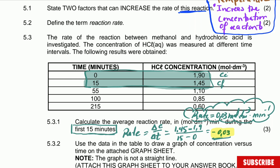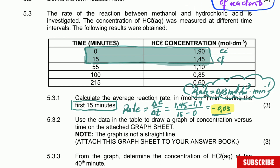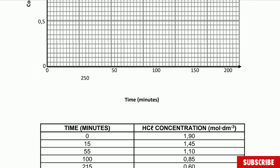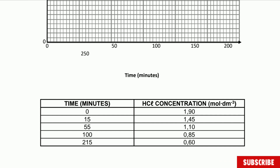Question 5.3.2: use the data in the table to draw a graph of concentration versus time on the attached graph sheet — the graph is not a straight line. Here we are at the graph paper with the table copied down for fast plotting. On the x-axis you have time; the scale reads 50, 100, 150, 200, 250, and 300.